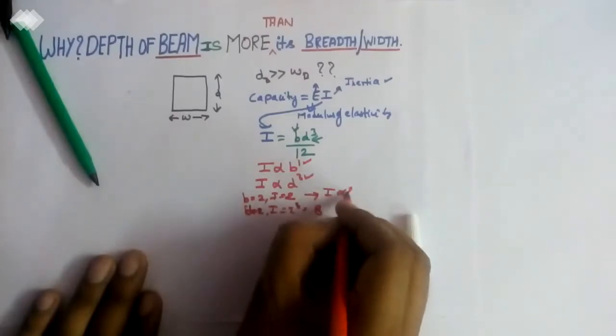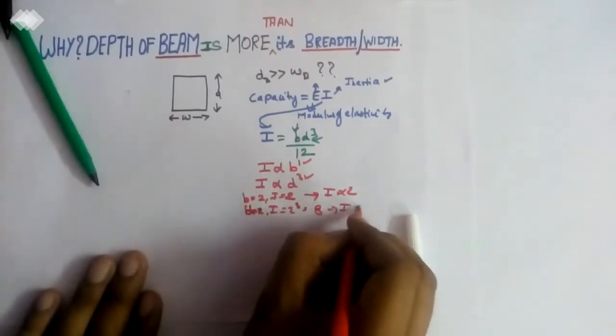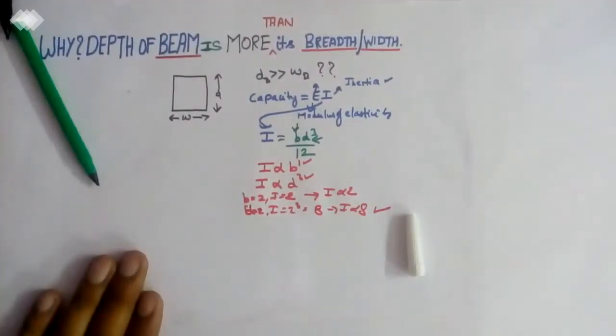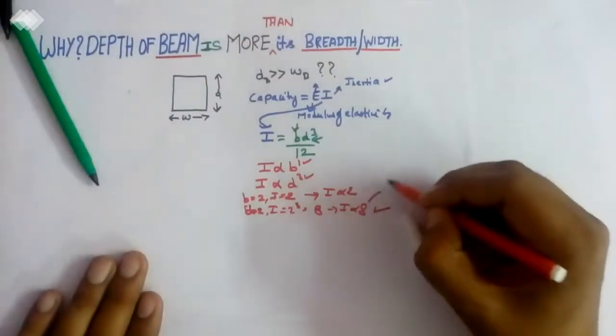So I is proportional to 2 versus proportional to 8, so the strength of the beam will be more stable.